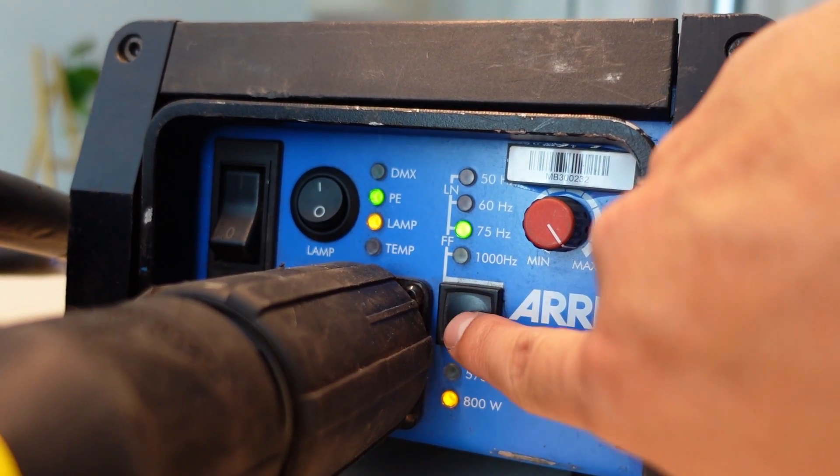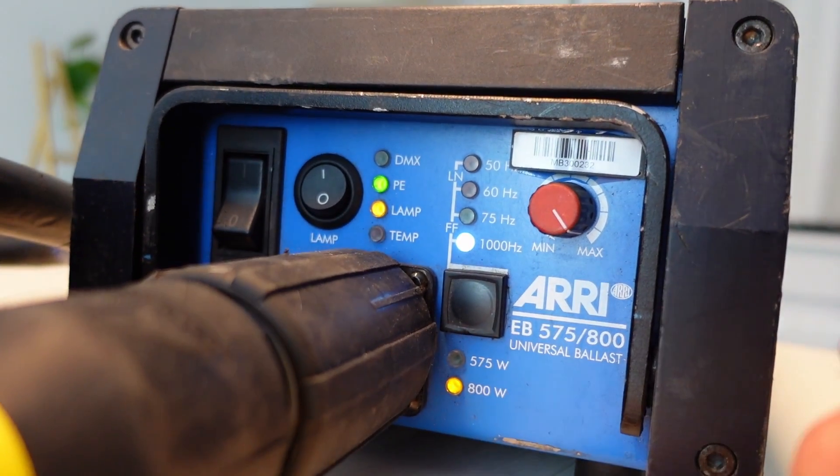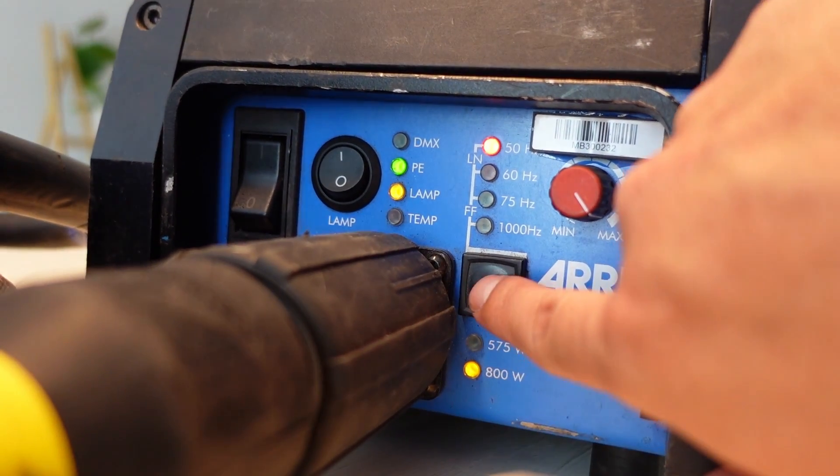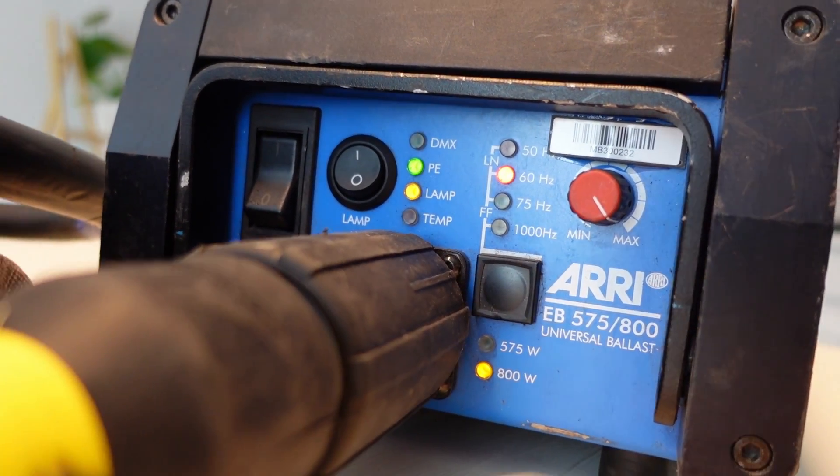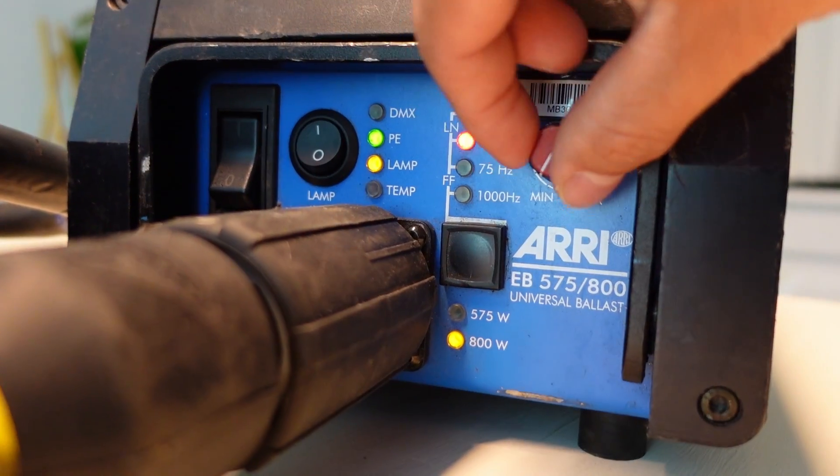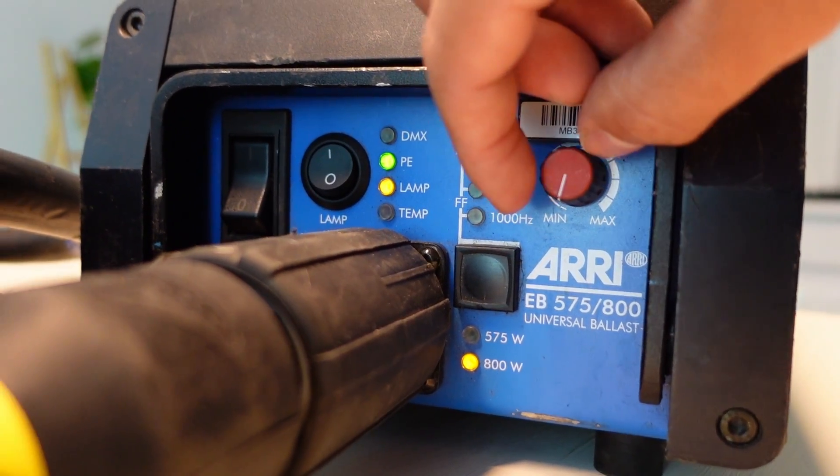While the light is on, you can change the frequency to match your camera setting so you don't see any flicker. And if you are shooting at high speed, there's a flicker-free option, which is 1000 Hz. You can also change the intensity between 50%, which is the lowest setting, to 100%.